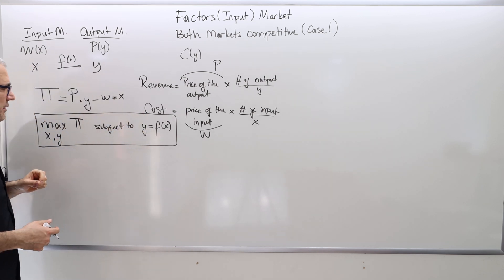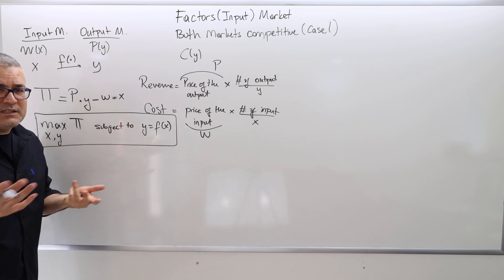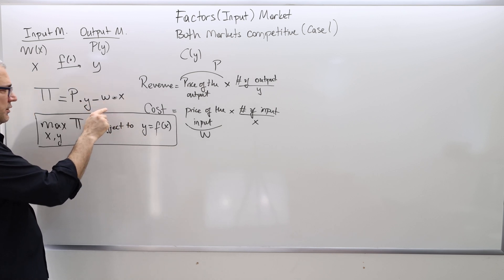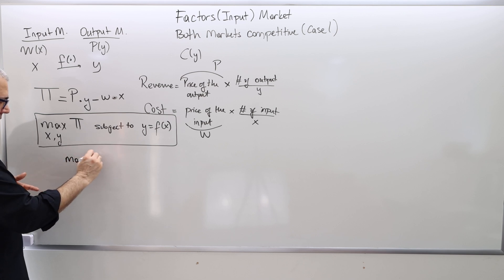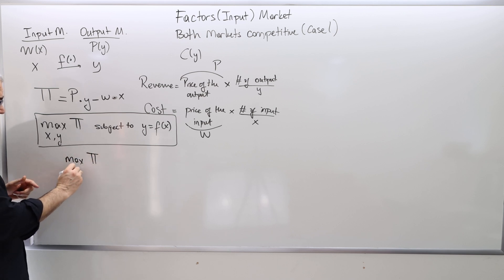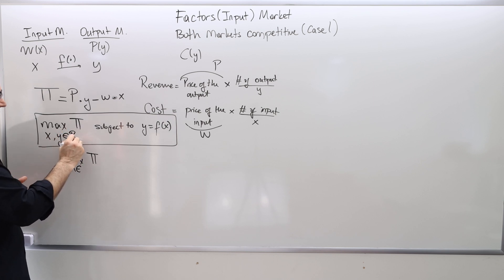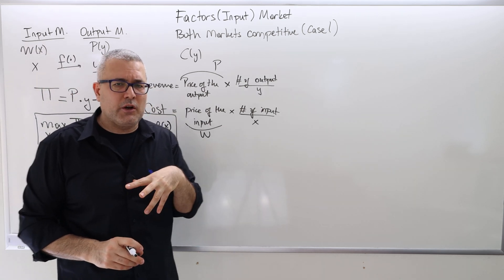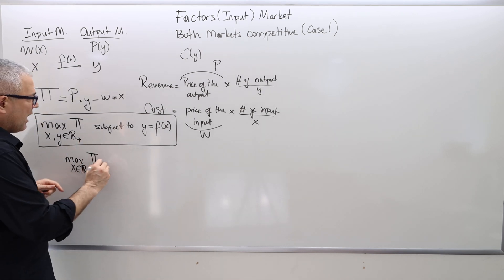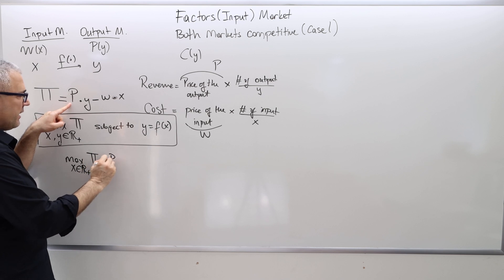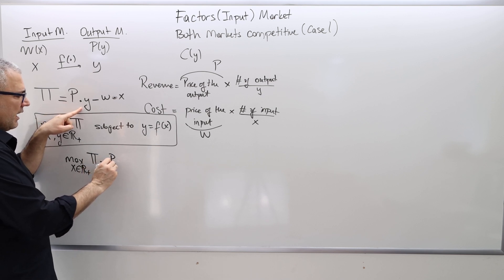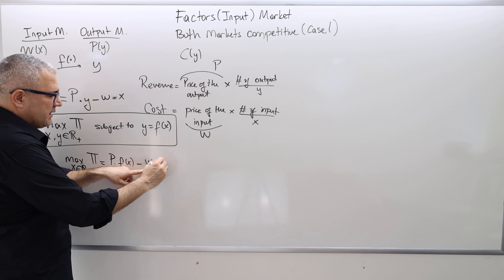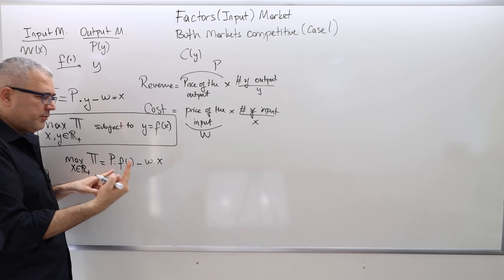How do I solve this optimization problem? You could use Lagrangian, but there's an easier way — the substitution method. Whenever you see Y, just plug it into the profit function. So the problem becomes: maximize π by choosing X only, where X and Y are non-negative real numbers. Pi becomes P times F(X) minus W times X. So now I have a function of one variable, which is X.